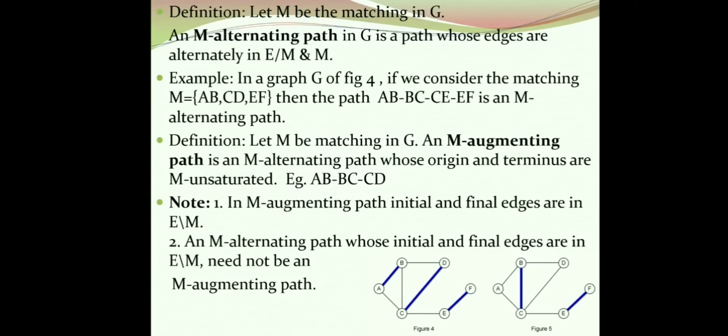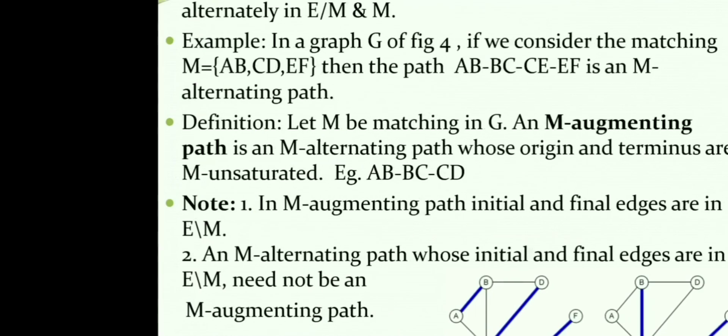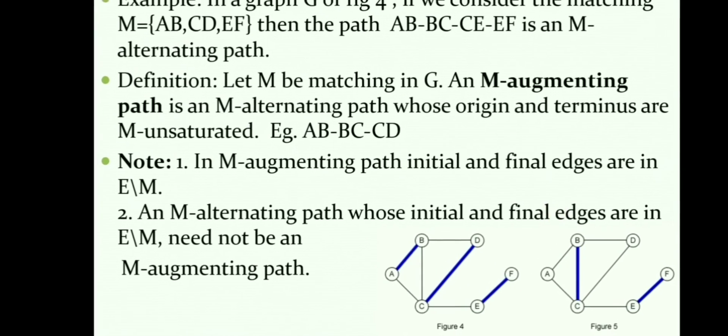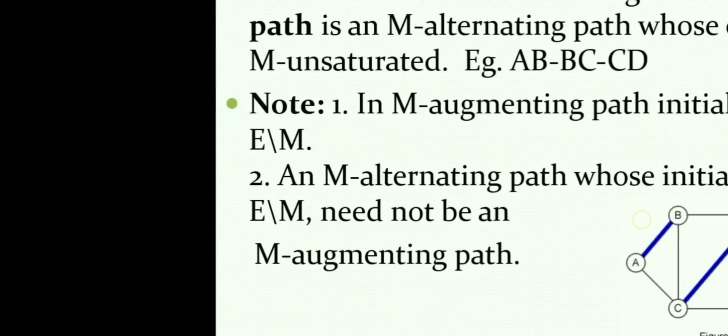The next definition is M-alternating path. An M-alternating path in G is a path whose edges are alternately in E minus M and M. Let us get it clear with an example. Consider the example, that is the second figure, in which the path we have mentioned is A-B-C-E-F.